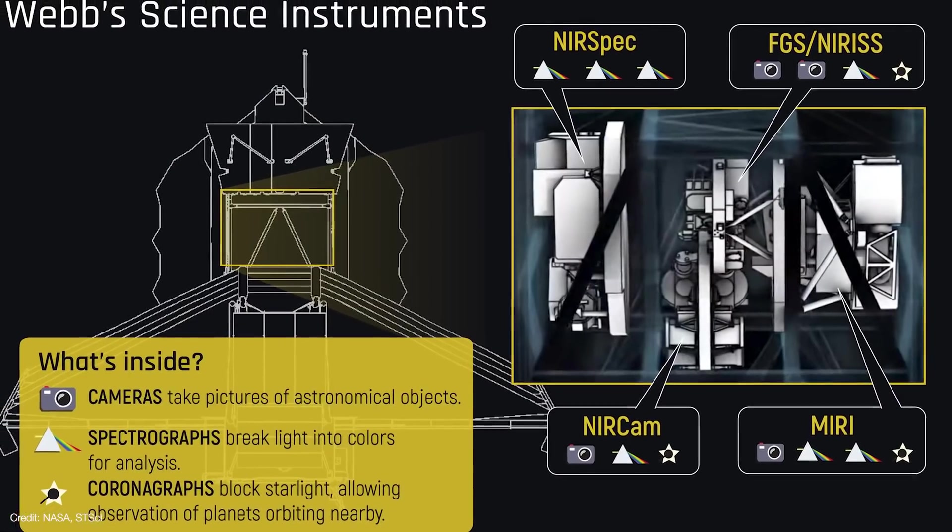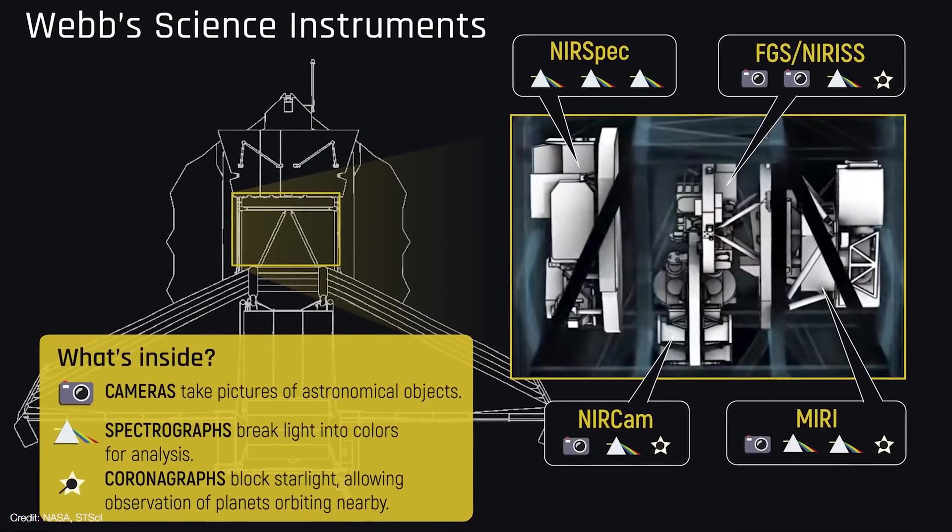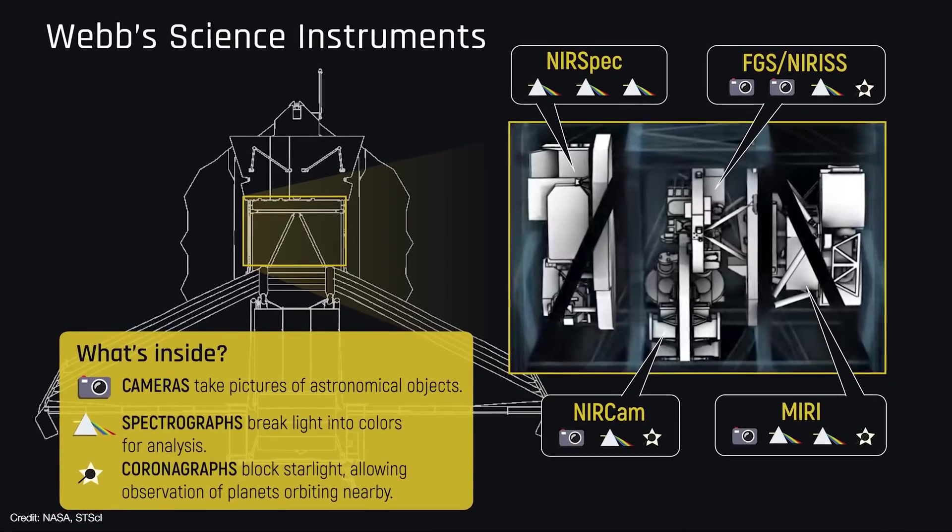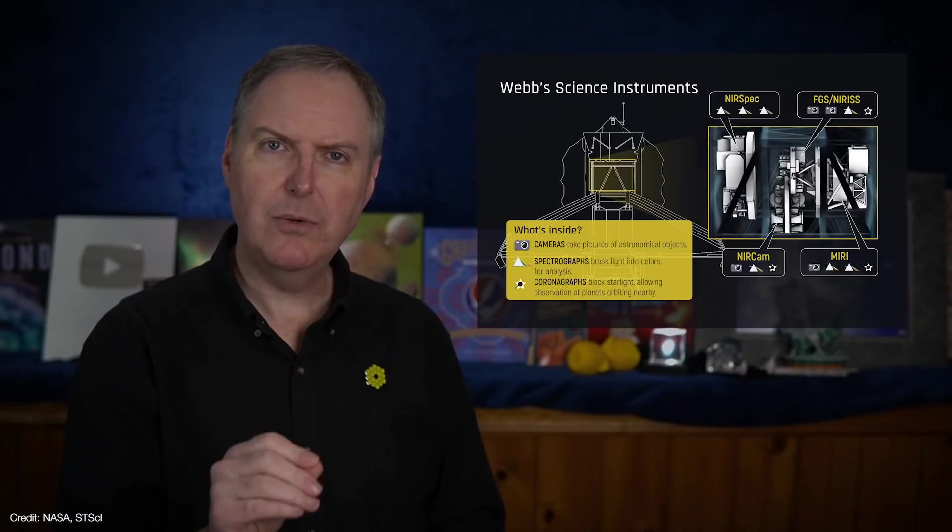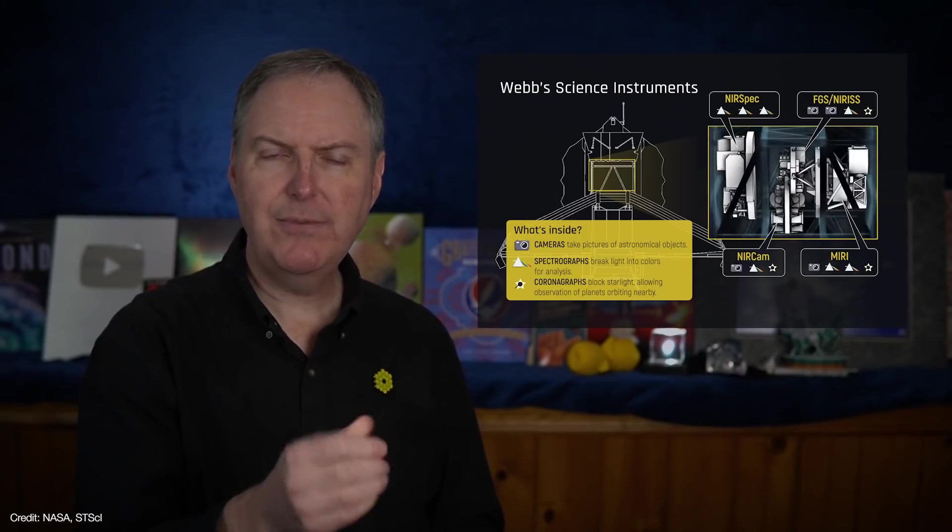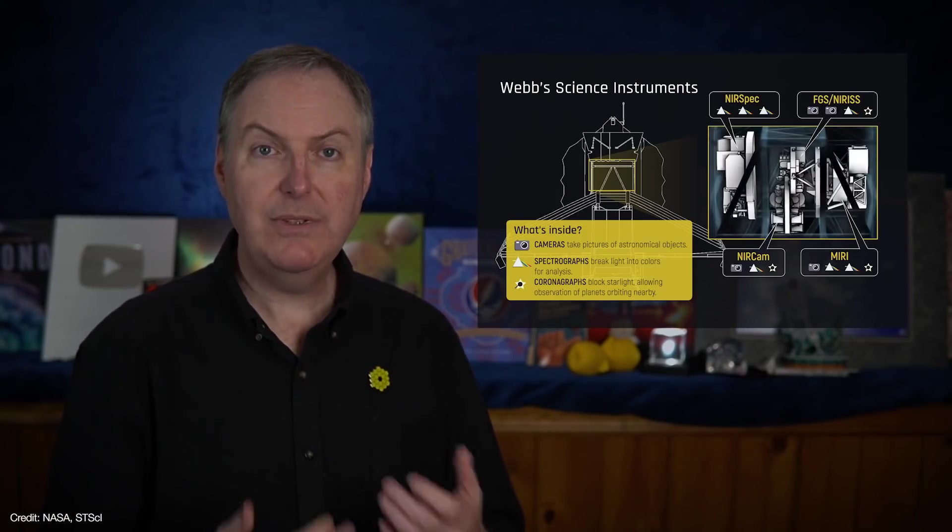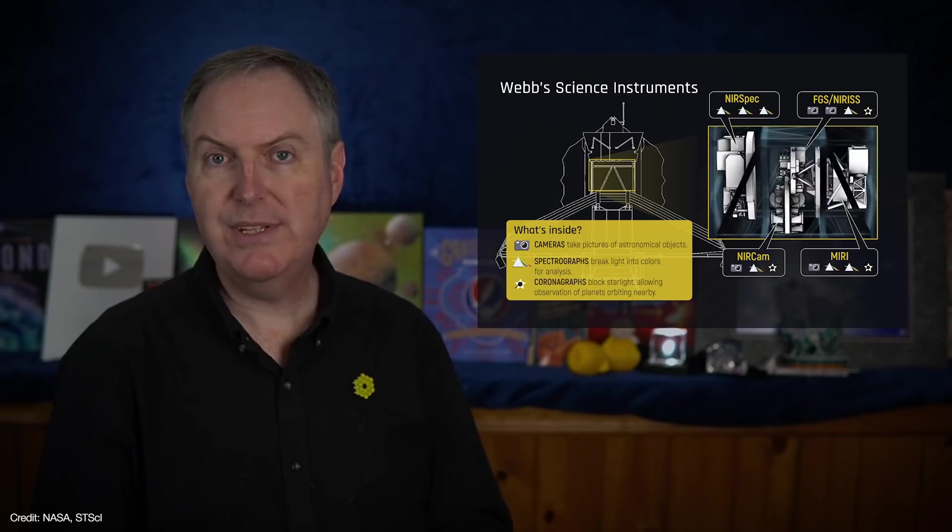All of Webb's instruments must be very cold in order to detect faint infrared signals coming from across the universe. The near-infrared instruments alone will need to reach about 30 Kelvin before they can be used. They will need a few months to reach those temperatures for a couple of reasons.